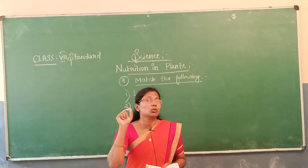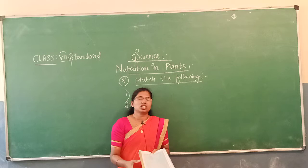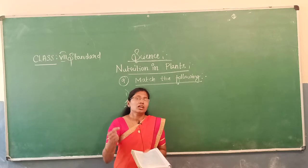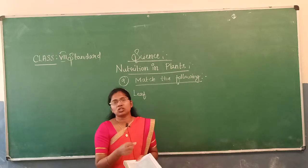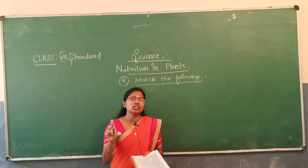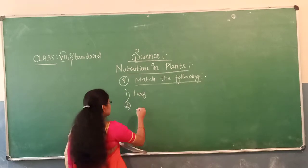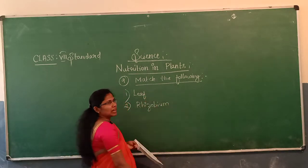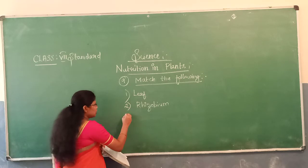The next item is nitrogen. Atmospheric nitrogen gas is present, but plants cannot absorb nitrogen gas directly. There is a bacteria that absorbs the nitrogen gas, converts it into a usable form, and releases it into the soil. For nitrogen, the answer is Rhizobium, the bacteria which absorbs nitrogen gas from the atmosphere.